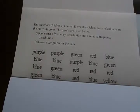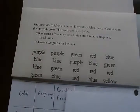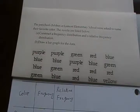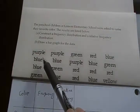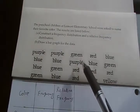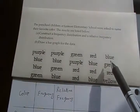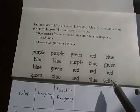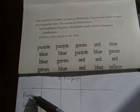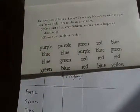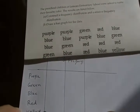We have a total of 20 colors. Our table would look something like this: we would have color here, and then frequency, and then relative frequency. Our colors are purple, green, red, blue, and yellow. We write down those names of the colors here: purple, green, blue, red, and then yellow.